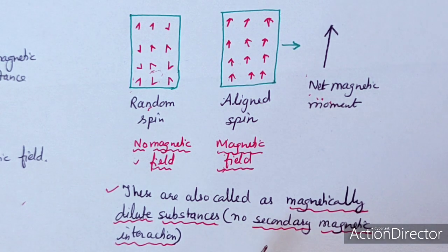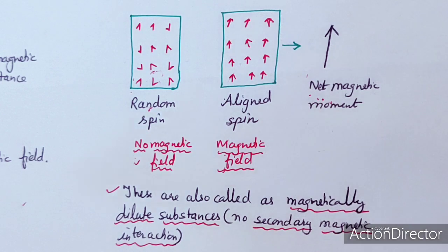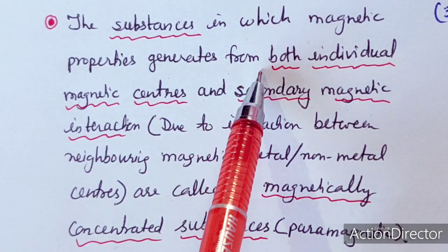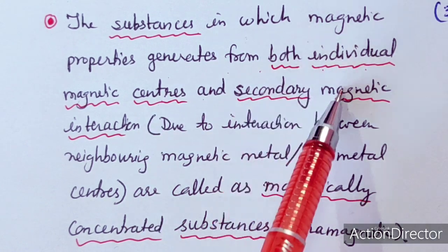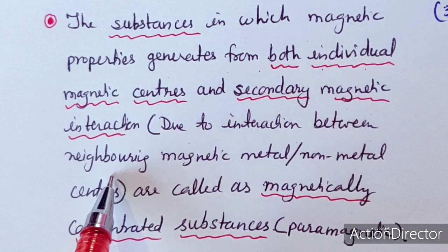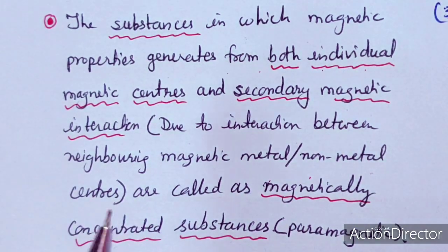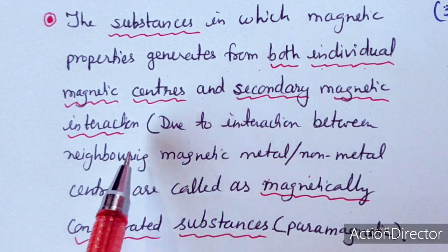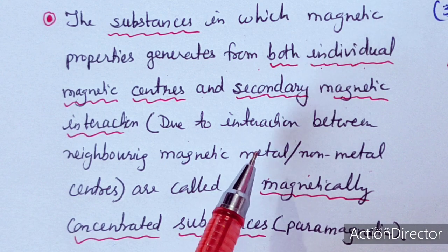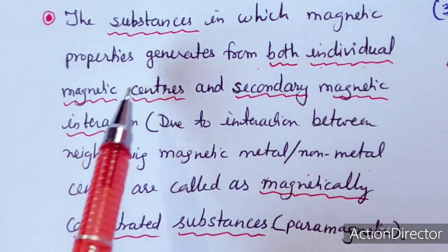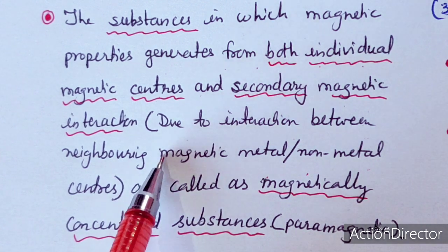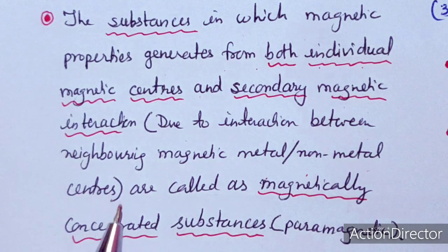Secondary magnetic interactions occur in other kinds of paramagnetic materials discussed later. In some substances like metal oxides, the magnetic behavior arises from both individual magnetic centers and their interaction with an oxide ion in between two metal centers — this electronic interaction with the oxide ion's electronic system is known as secondary magnetic interaction.